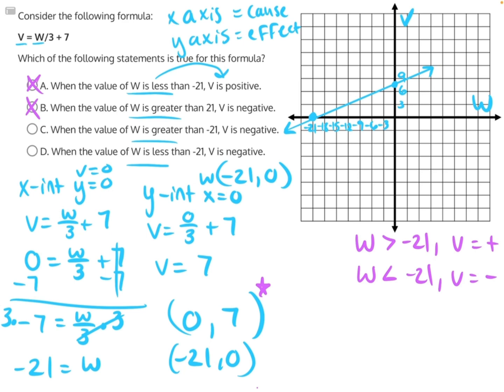C says when the value of w is greater than negative 21, v is negative. Well, greater than would be to the right-hand side of negative 21. And all of these v-values are positive, not negative, making C incorrect.